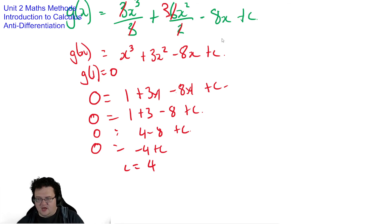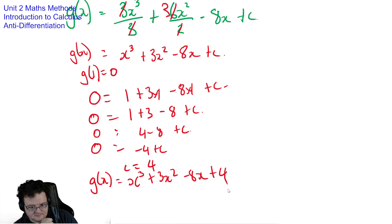And then you would go back up and write the full equation properly with no c in it: g of x is equal to x cubed plus 3x squared minus 8x plus 4. Alright, so there's no first principles, there's no other sneaky stuff. You are given the rule to start with, you just have to remember to deal with the plus c if you have the information.